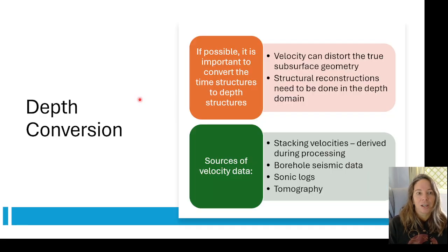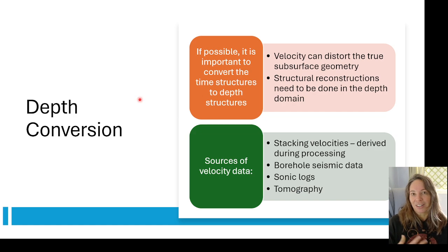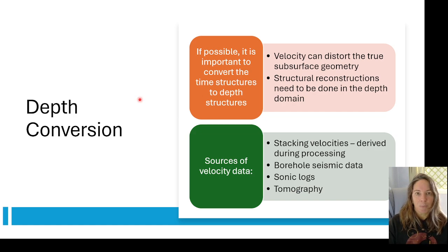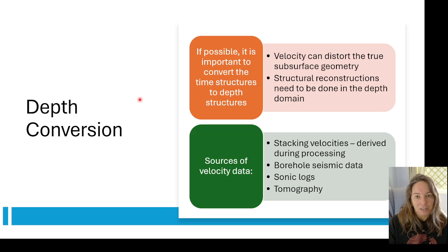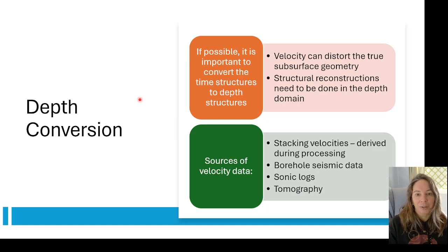Depth conversion: a lot of what we may start out with is time data, and if you have heterogeneous velocity what you'll want to do is correct for velocity and do a depth conversion. This gives you better structural reconstructions — working in the depth domain your structure tends to be more accurate. You can get velocity data from the processing velocity, borehole seismic data, sonic logs, or even tomography, as well as check shots. Use these to build a more accurate velocity model and do that depth conversion if your study warrants it.